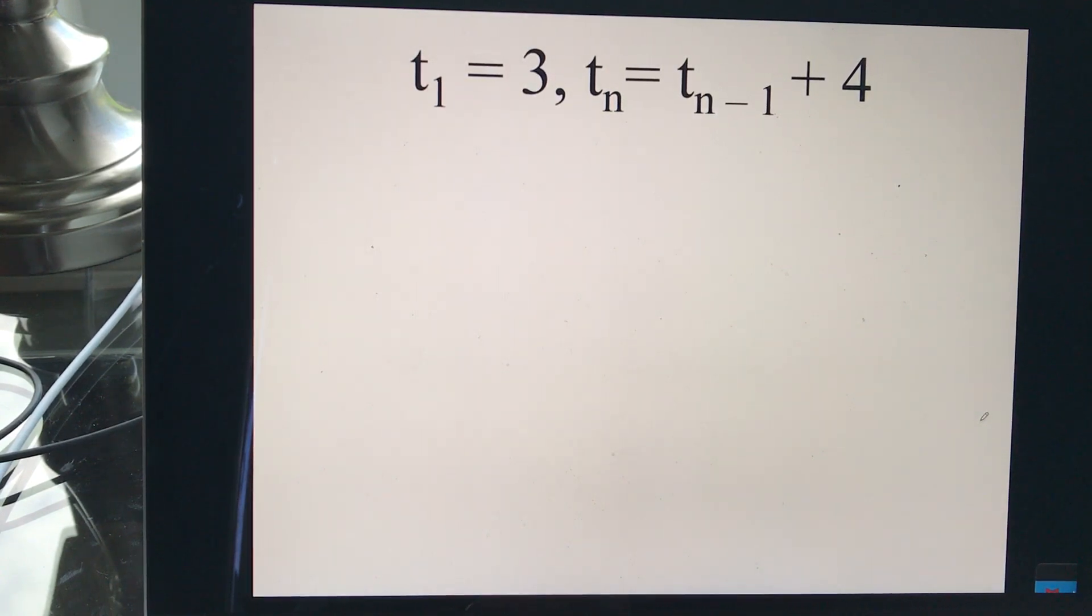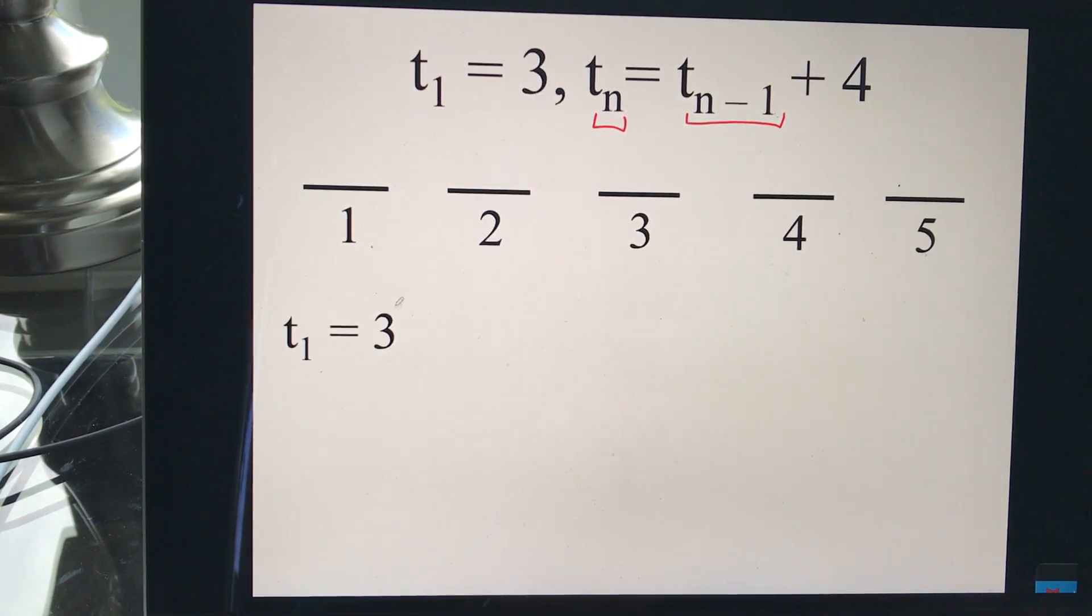So, for example, here I have, I'm given T1 is 3, and then I'm given Tn is Tn minus 1. And this n minus 1 is just saying it's the previous term. That's all. So, my current term is just equal to my previous term plus 4. So, I can dash it out. Now, I'm given T1 is 3. Got it. So, I know T1 is 3.